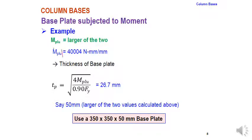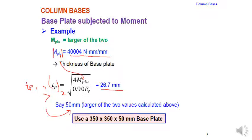Using the larger mplu = 400,004 N·mm/mm, tp2 = 26.7 mm. The final base plate thickness is the larger of tp1 and tp2. tp1 = 45.4 mm governs, rounded up to 50 mm. The final base plate dimensions are B × N × tp = 350 × 350 × 50 mm.